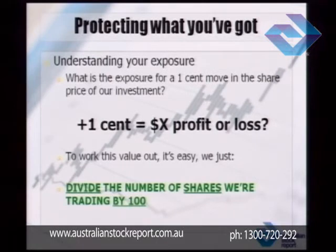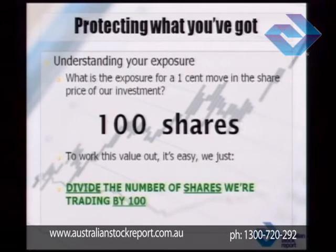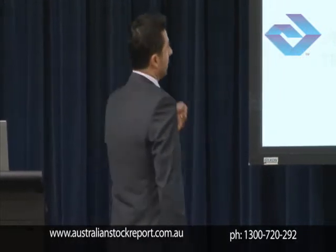Divide the number of shares we're trading in by 100. So let's take a hypothetical example: we're looking to invest in 100 shares of BHP. BHP looks pretty good, it's about $40 and we want to buy 100 shares. The question is, how much are we risking? If BHP moves in our favour by one cent, what do we make? If BHP moves against us by one cent, what are we going to lose? We're going to divide that number — 100 shares — by 100.